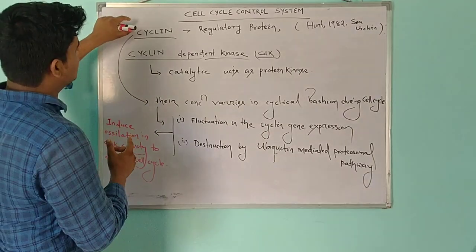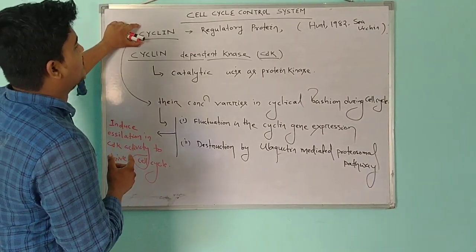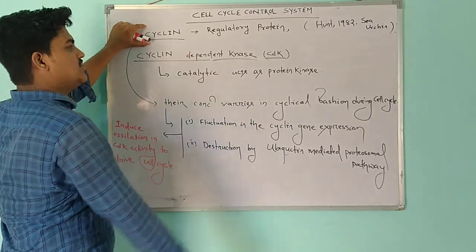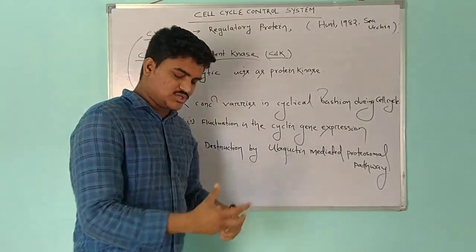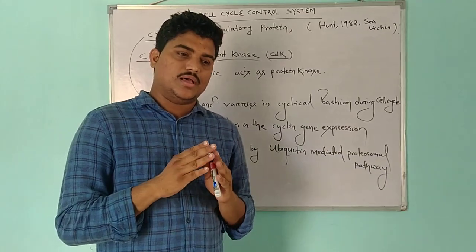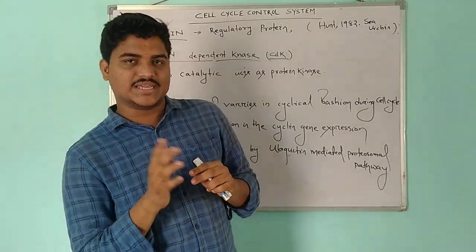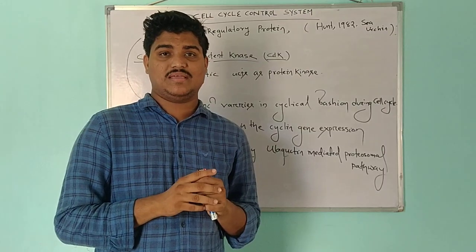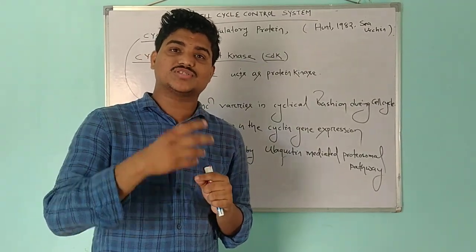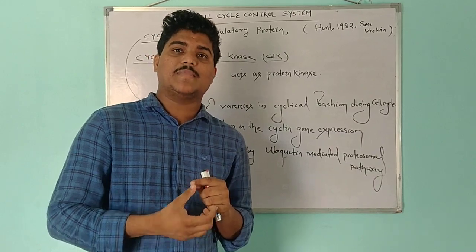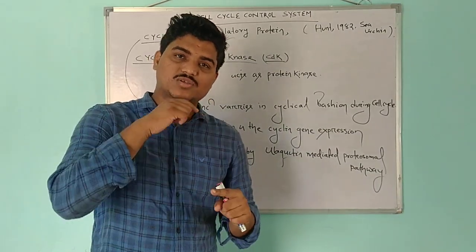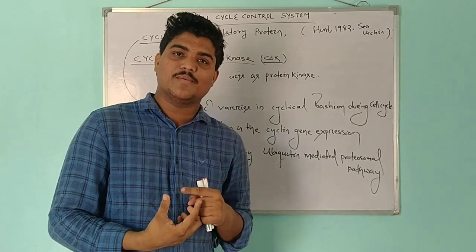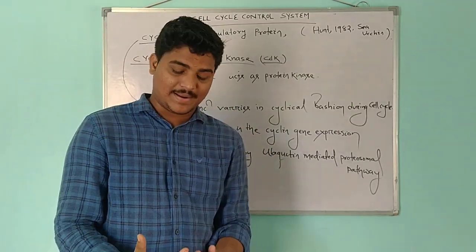Cyclins are of different types, classified on the basis of at which stage of the cell cycle they bind with the CDK. Cyclin is a special type of protein which regulates CDK, and CDK controls the proceeding or activities of the cell cycle by phosphorylating different target proteins. The role of cyclin is to activate CDK by binding with it.